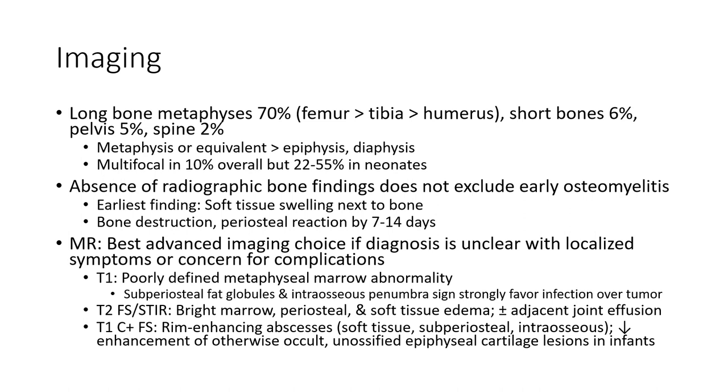On MRI, T1 sequences show well-defined marrow signal abnormality. T2 fat-saturated sequences demonstrate edema within the marrow and surrounding soft tissues.